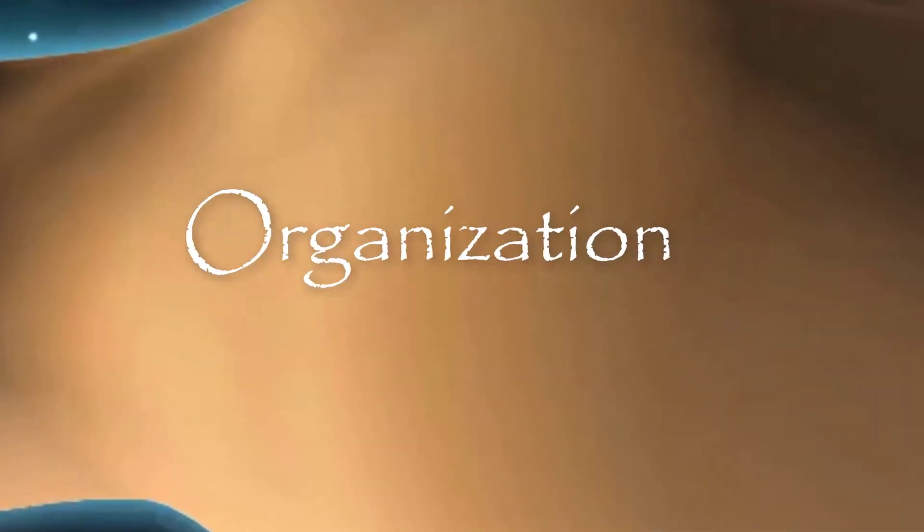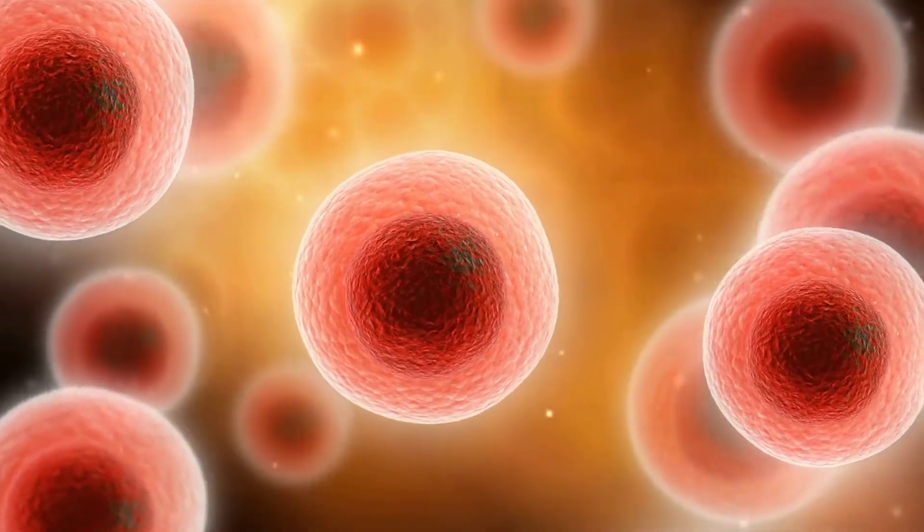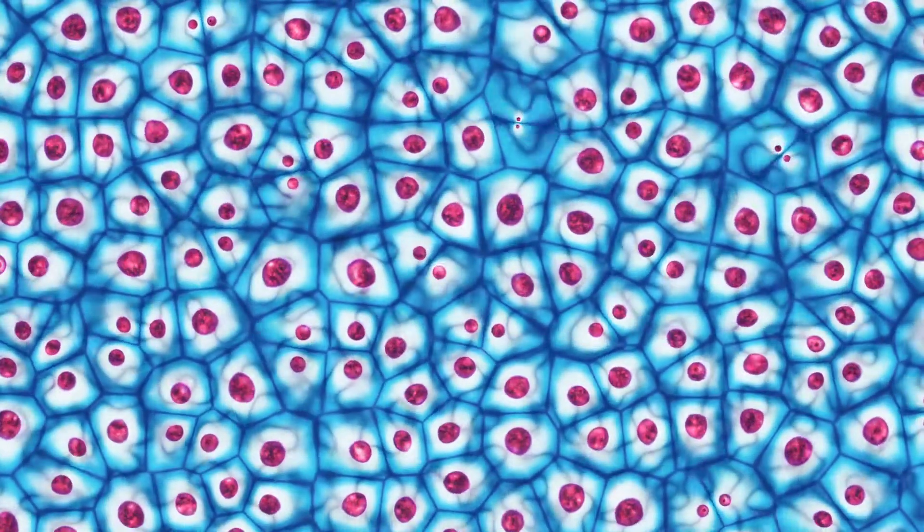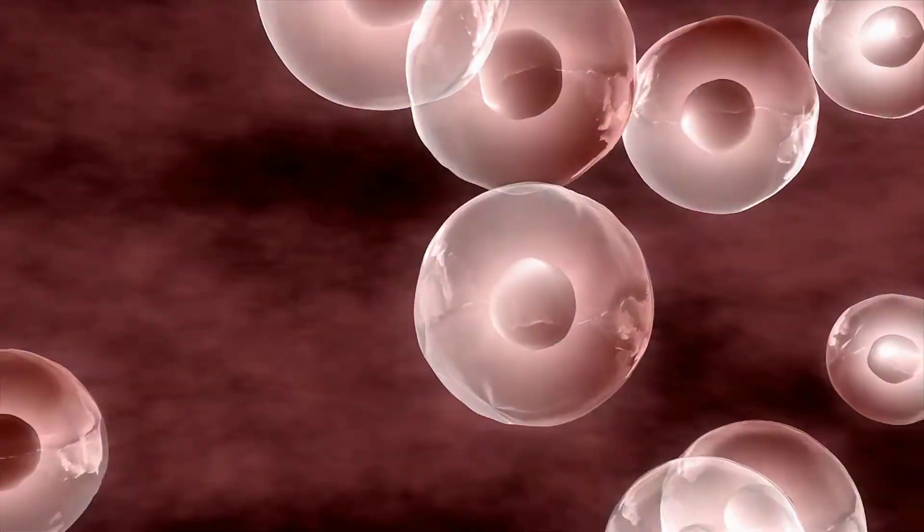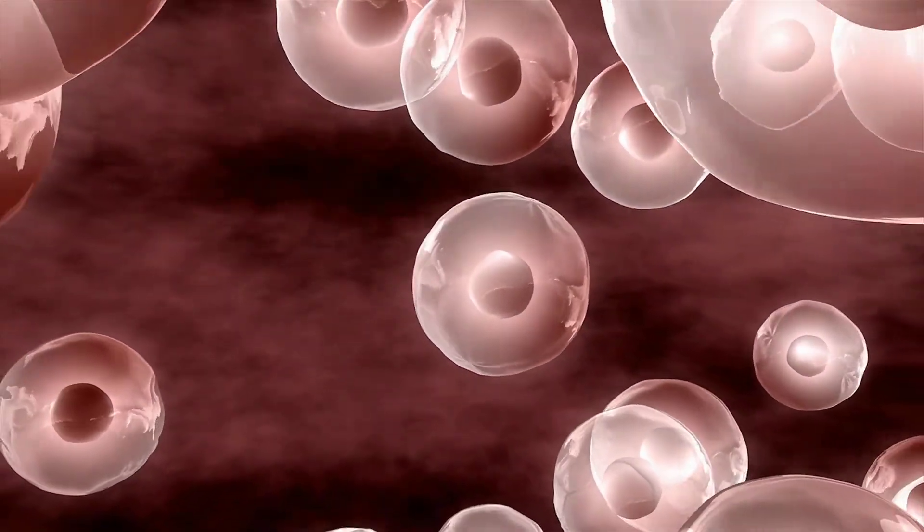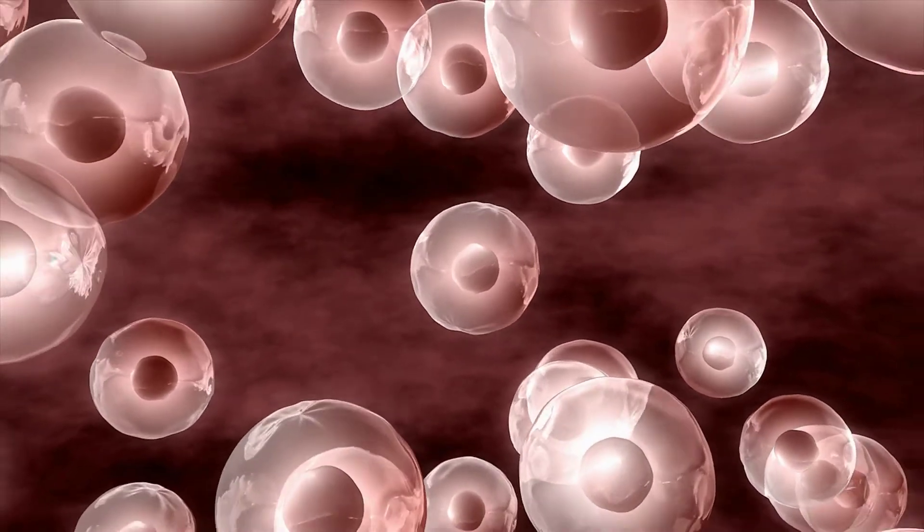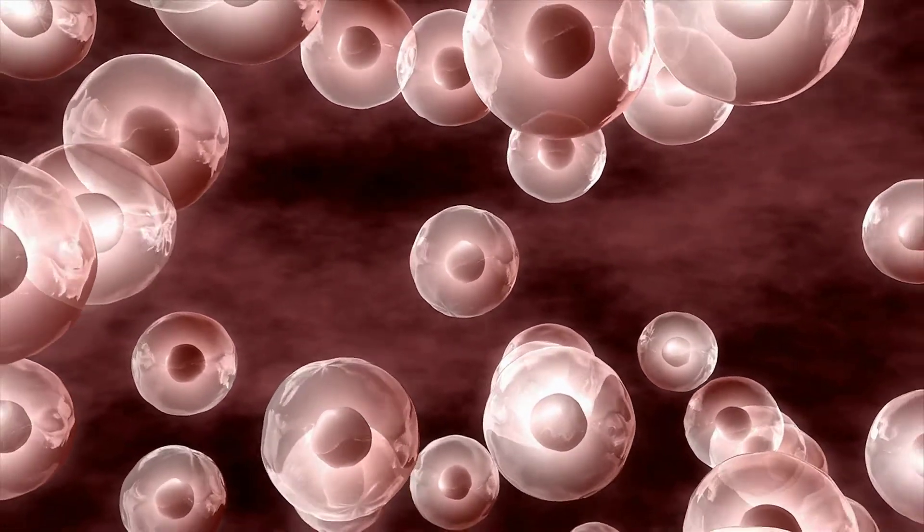Organization. A human body consists of trillions of cells organized in a way that maintains distinct internal compartments. These compartments keep body cells separated from external environmental threats and keep the cells moist and nourished.